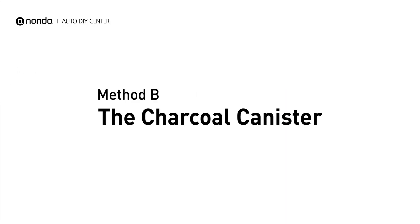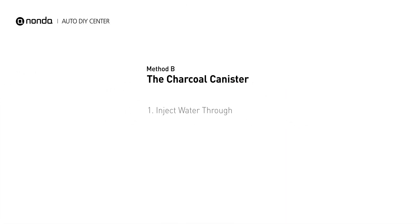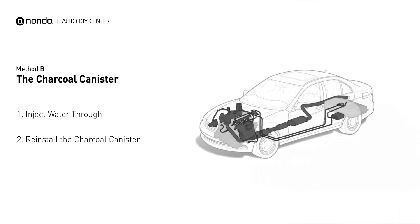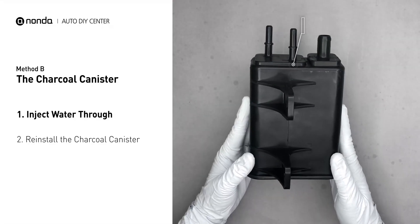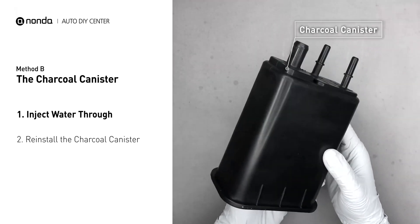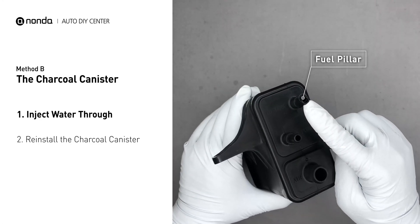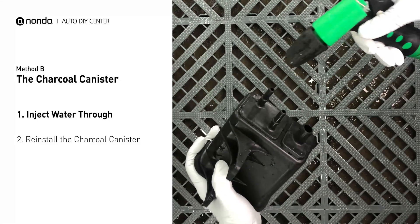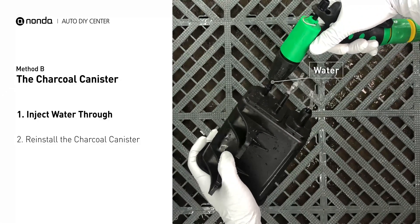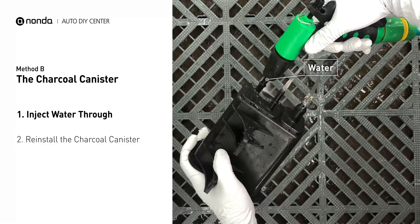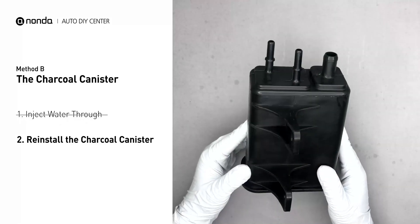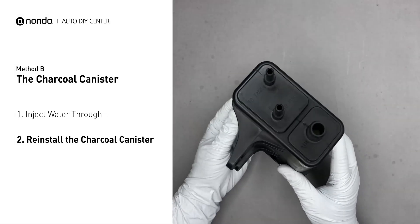Method B: the charcoal canister. Most fuel vapor canisters can be located on the driver's side of the vehicle, close to the rear tire. Carefully remove the charcoal canister from your car. Locate the fuel pillar and inject water from the fuel pillar to clean the charcoal canister through. Reinstall the charcoal canister back in your car once it gets dried.